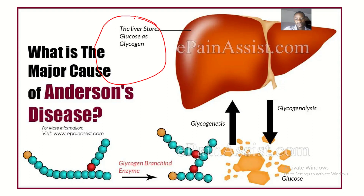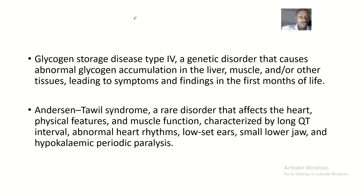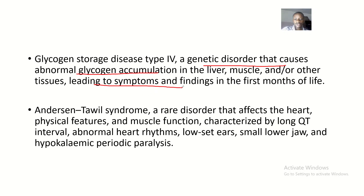The liver stores glucose as glycogen, but this glycogen is not able to be broken down into glucose. Glycogen storage disease type 4 is a genetic disorder that causes abnormal glycogen accumulation in the liver, muscles, and other tissues. This will lead to symptoms and findings in the first month of life.